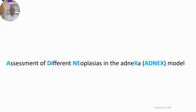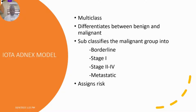Looking at the assessment of different neoplasias in the adnexa, which is the ADNEX Model — a multi-class model — which not only differentiates between benign and malignant lesions, but also subclassifies the malignant lesions into borderline, stage 1, stage 2 to 4, metastatic, and also a non-specific category.